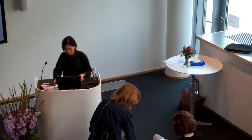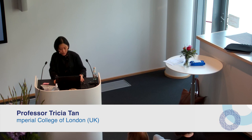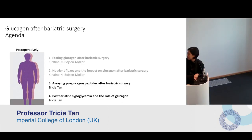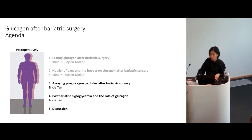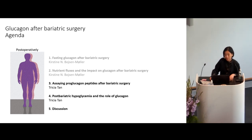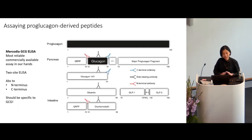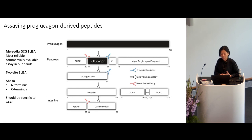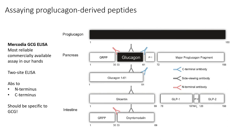Thanks Kirsten also for doing the first part of the introduction. The rest of my talk will cover a little bit about assaying of the proglucagon peptides after bariatric surgery. Then I will discuss post-bariatric hypoglycemia, which is an increasingly common complication that we've come to appreciate. As Jens covered beautifully yesterday, assaying for these proglucagon-derived peptides can be tricky. To date, the most reliable commercially available ELISA kits are the MACODIA, which has both N- and C-terminal antibodies, so it should be more specific for glucagon.